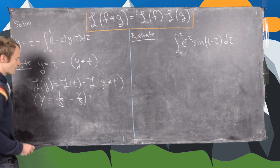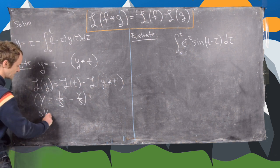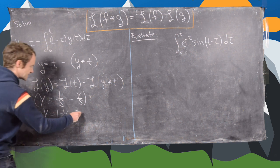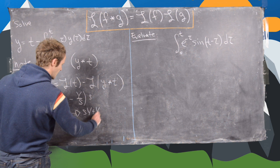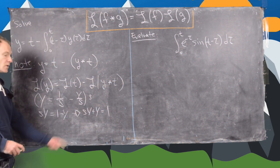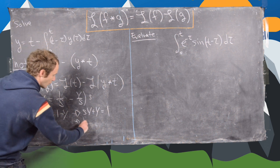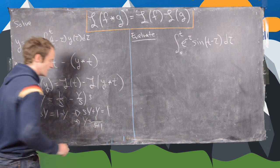From here, we'll multiply the whole thing by s and we'll get s times Y equals one minus Y, which will give us s times Y plus Y equals one, which we can factor as Y times (s plus one) equals one, so Y equals one over (s plus one).